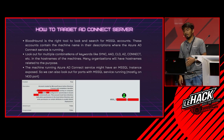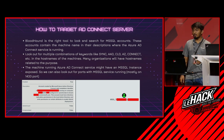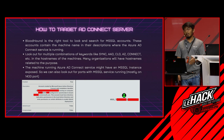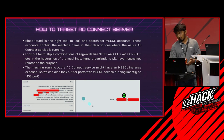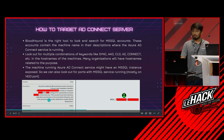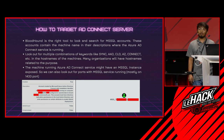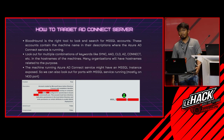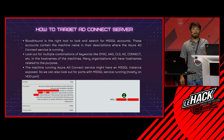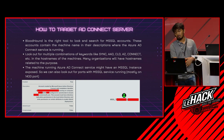To target the AD Connect server in an organization with thousands of machines, use BloodHound to search for MSOL accounts — the description field contains the machine name where Azure AD Connect is running. Look for hostname keywords like sync, AAD, CLD, or AEZ Connect. Many organizations name hosts according to their purpose. The machine running Azure AD Connect may also have MS SQL services configured since it stores data and credentials there, which can narrow your search drastically.